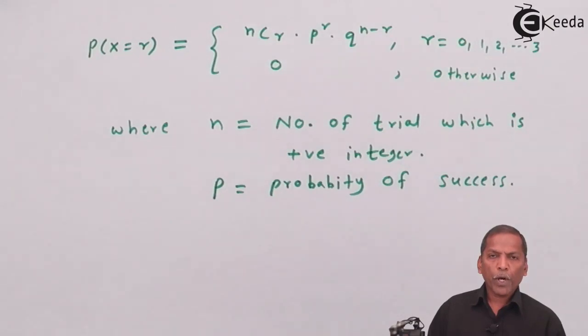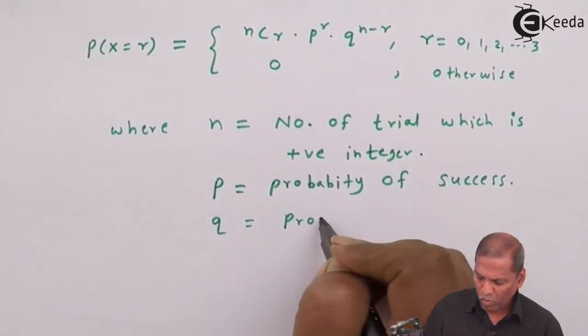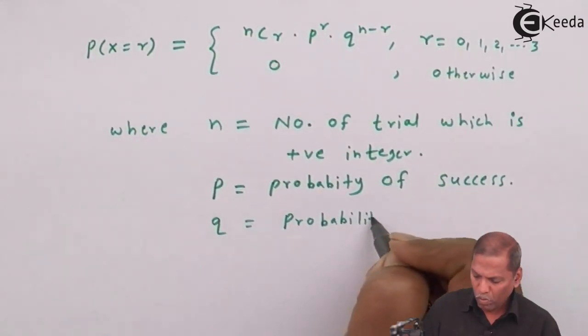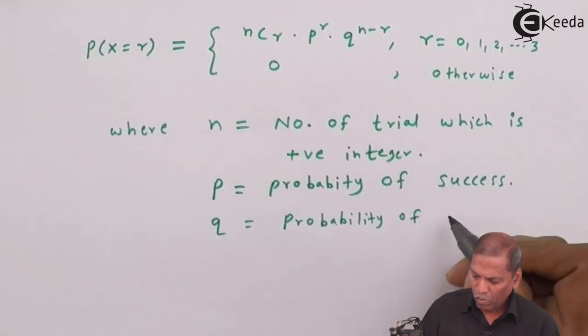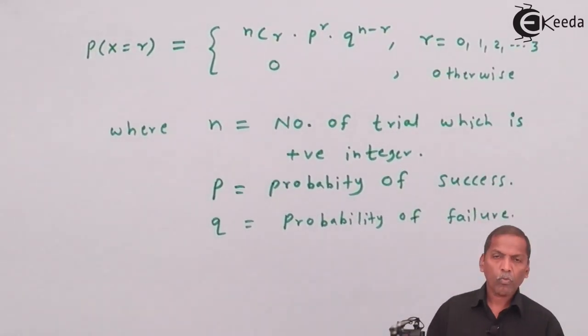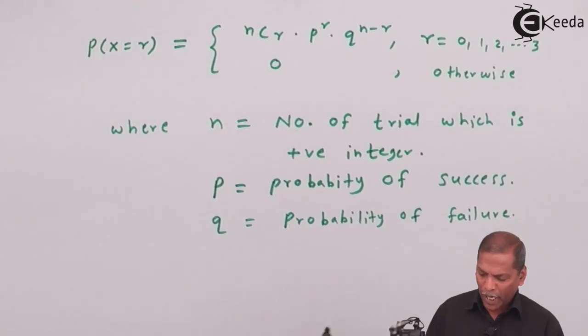q represents probability of failure. The relation between p and q is that p plus q must be equal to 1.